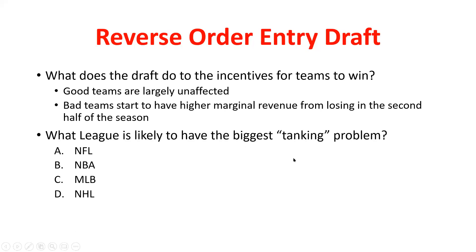Good teams are largely unaffected because they know they'll probably still make the playoffs, so there's no disincentive for them to win. But bad teams — if they're near the bottom — want to make sure they're at the very bottom to get that highest draft pick. Although the intent of the reverse order draft is good, within the season it can actually make competitive balance worse, driving those bottom teams to go even further toward zero wins. This is what we usually call 'tanking.' Which league might have the biggest problem with tanking?